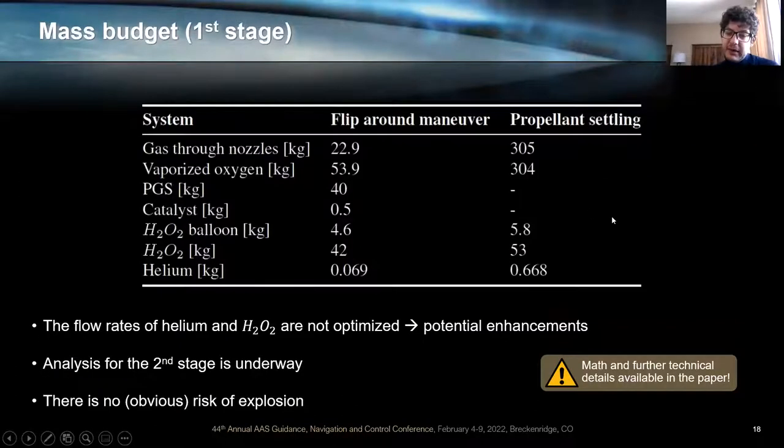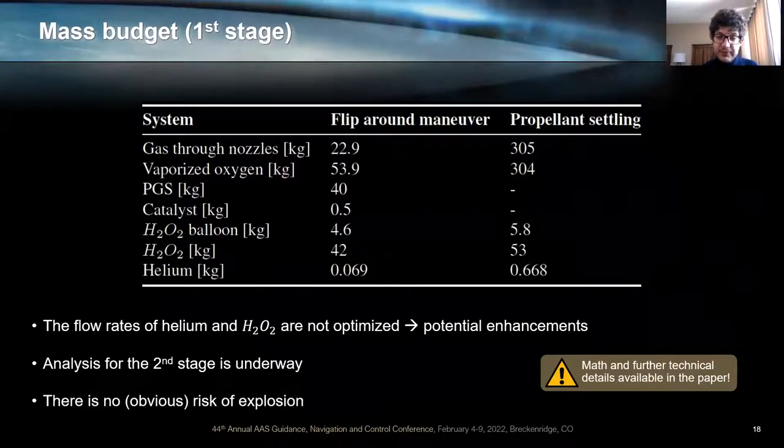This turns out to have a mass of more or less a hundred kilograms of passive weight. The flow rates of helium and hydrogen peroxide are not optimized. And if we optimize them in a future version of this work, we can see potential enhancements in terms of mass budget. And also you should know that this analysis of the second stage is not presented, but it's underway. In case you are wondering, there is no risk of explosion because we are injecting a hot mixture of water and oxygen into the oxygen tank. So there is no fuel to start an explosion in that scenario, even if it is an 800 Kelvin gas mixture.